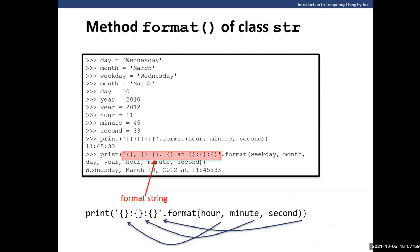A student asks about what can be placed inside the curly brackets in `format`. You can leave it empty for default sequential placement, or specify an index. That's essentially it — either empty or an index number controls which argument fills that placeholder.